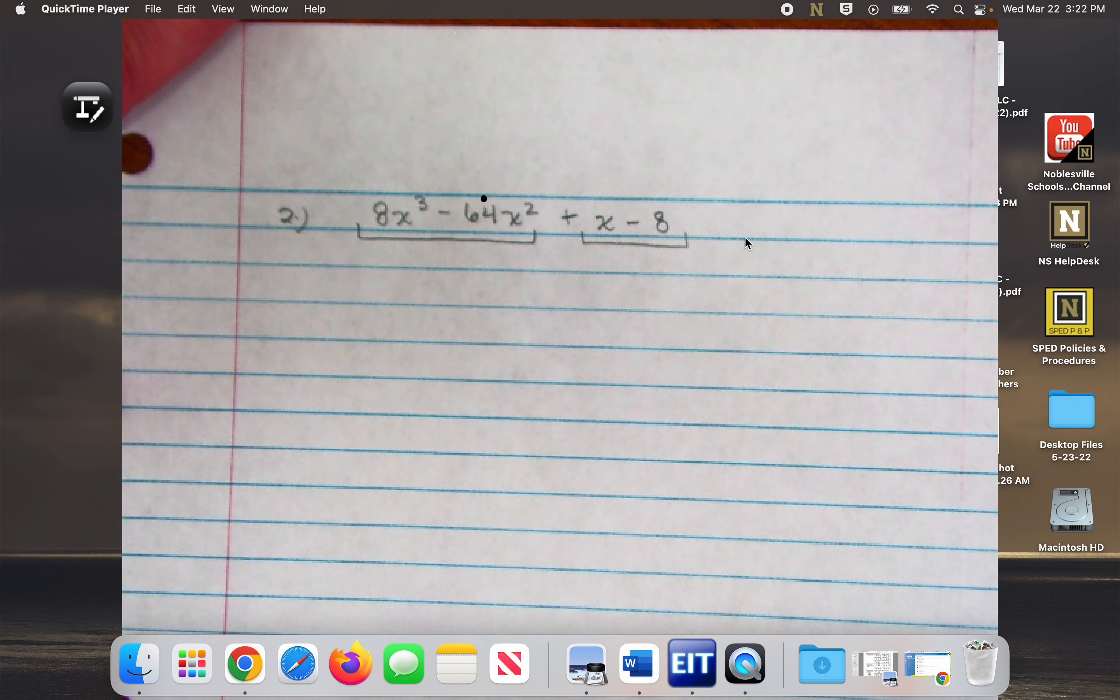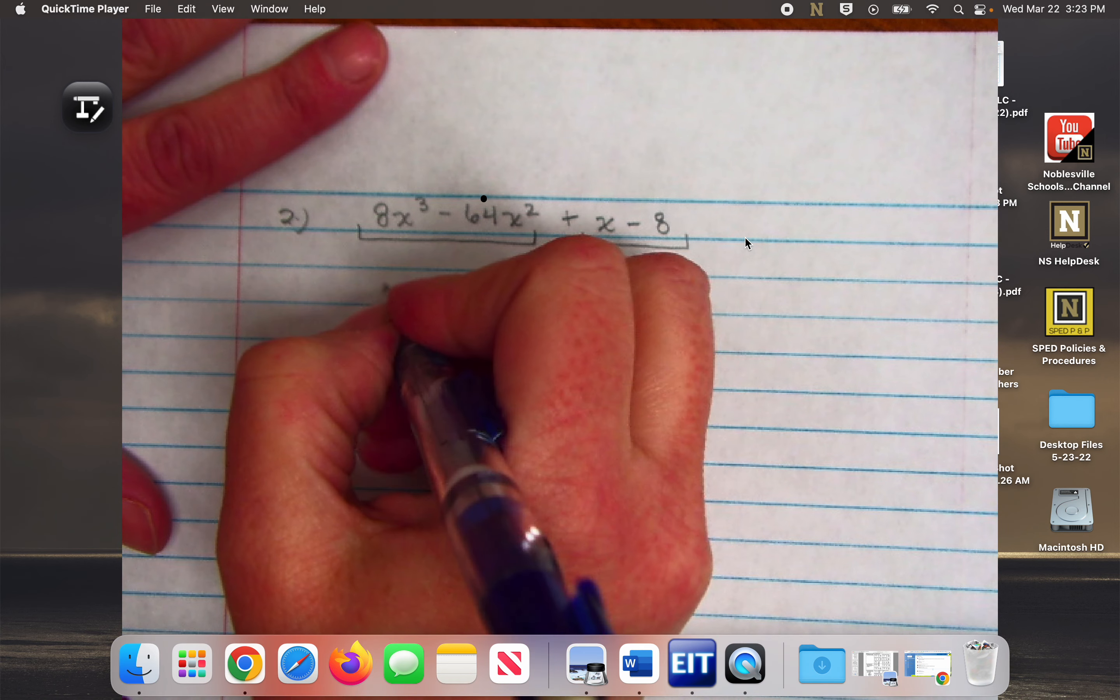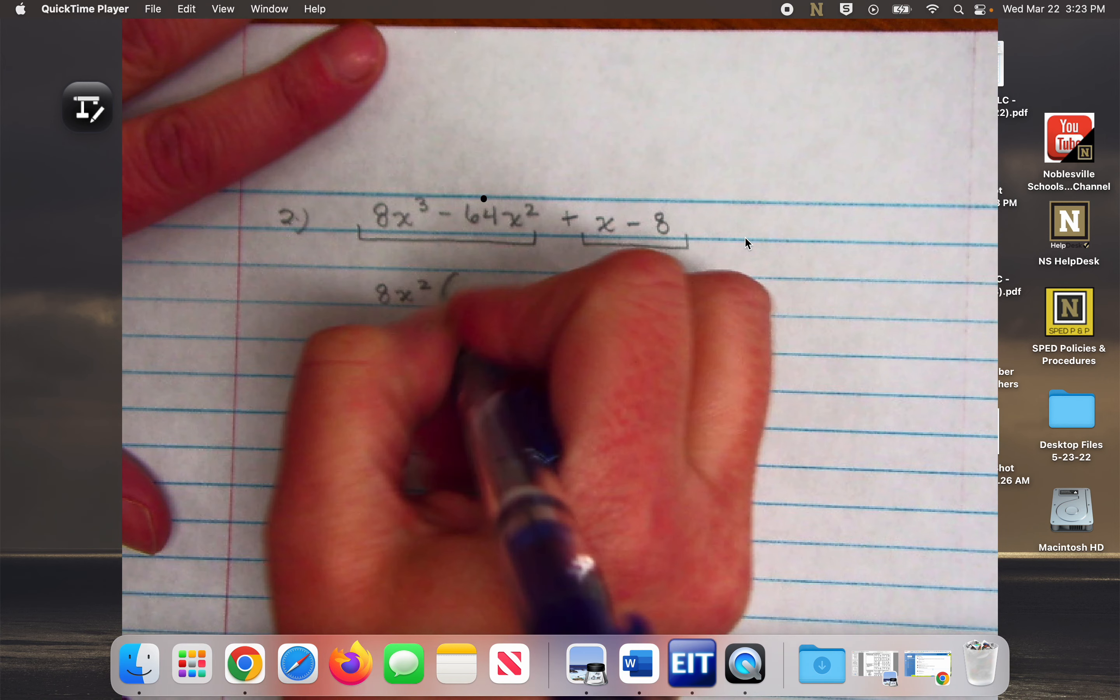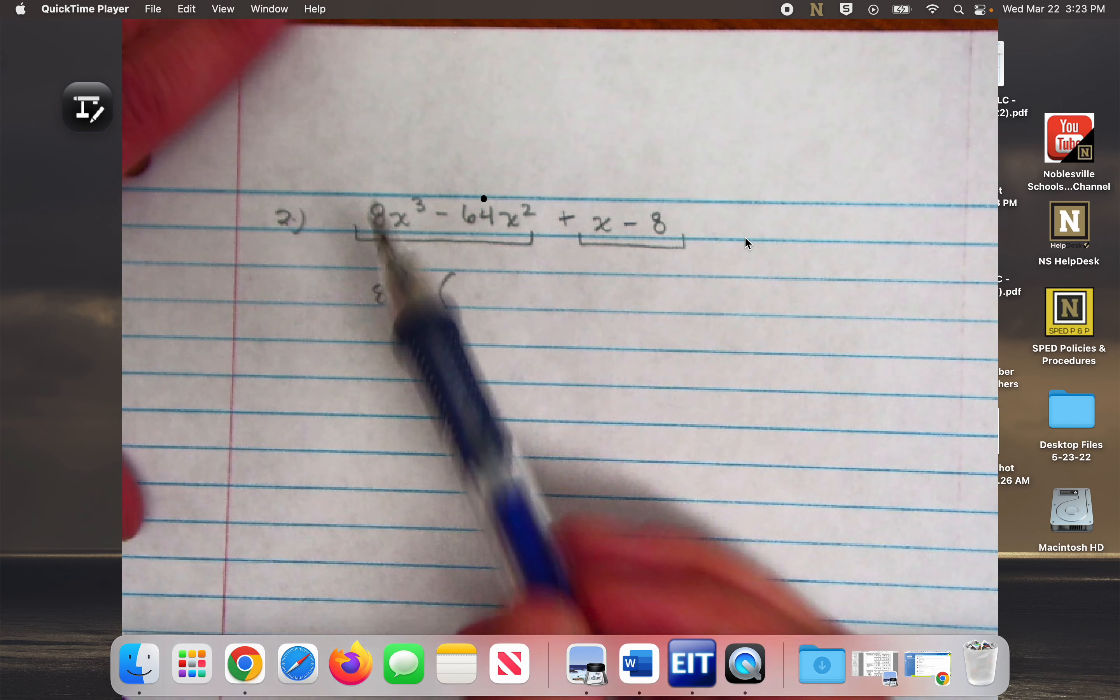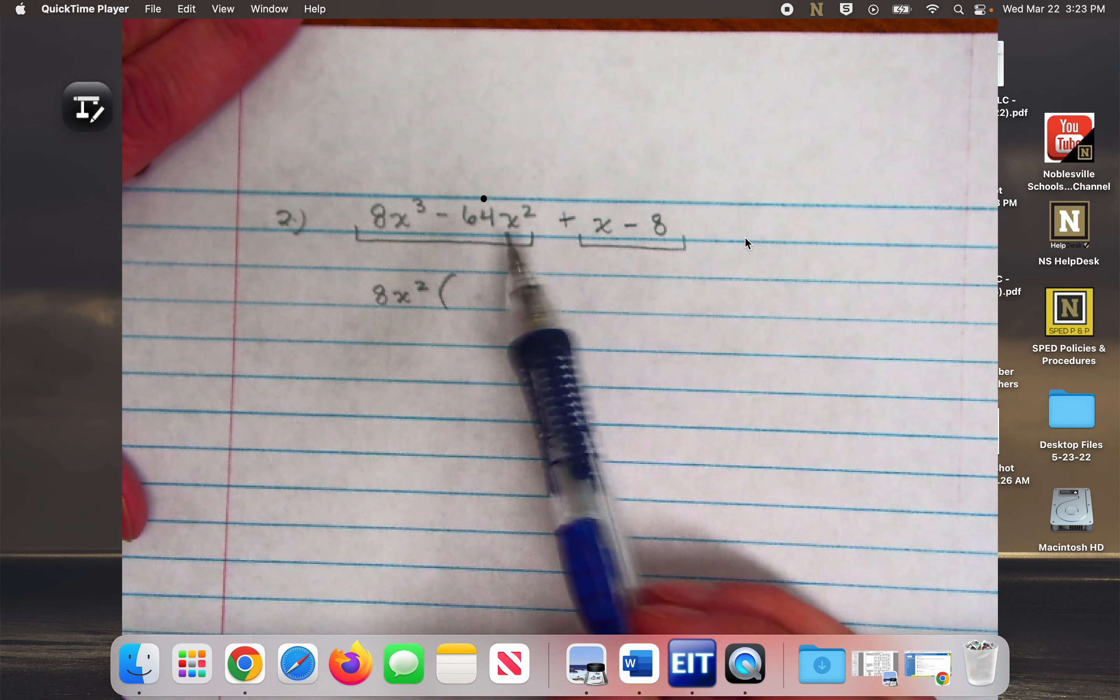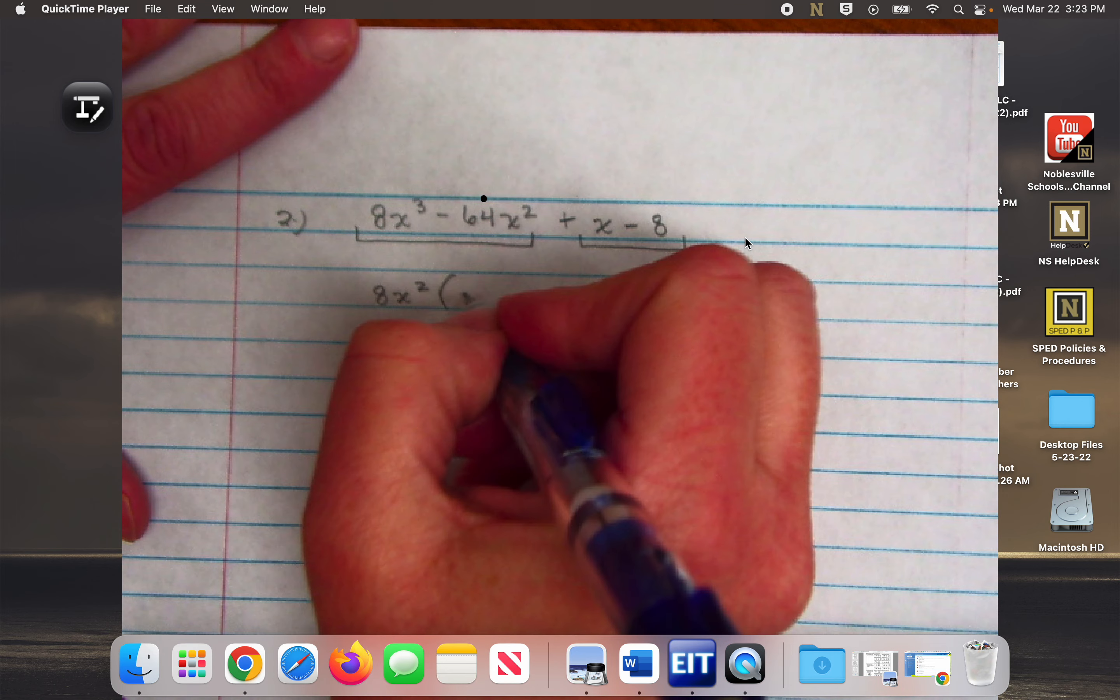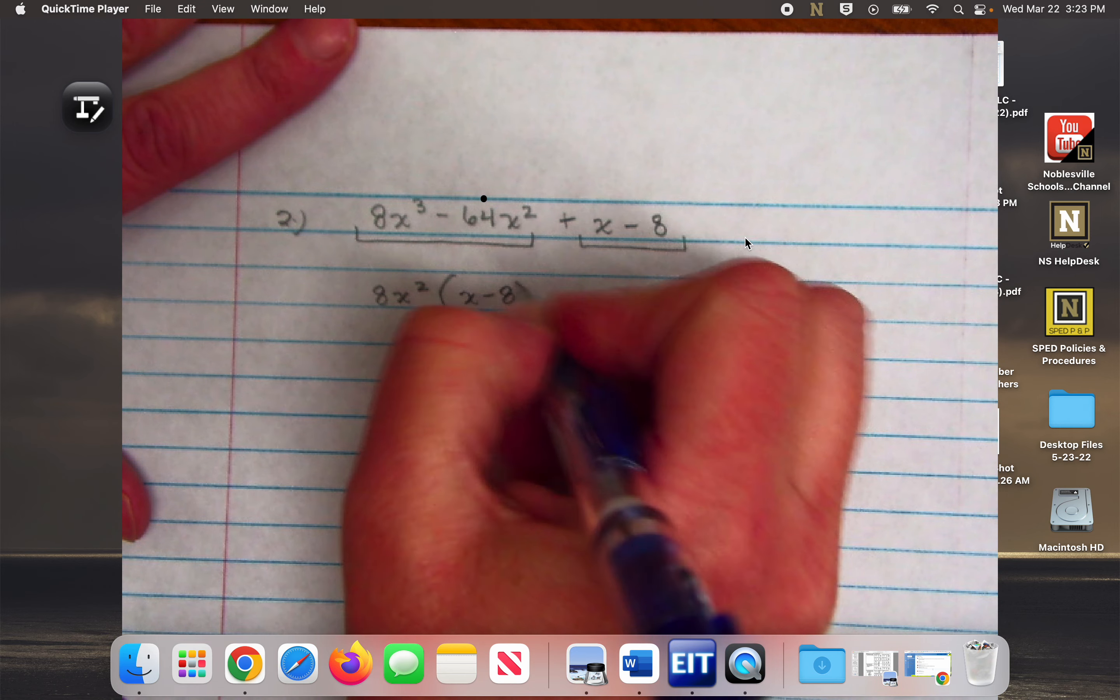What is it? 8x squared? Did I hear 8x squared? Yeah, so 8x squared, and it's going to be times x minus 8.